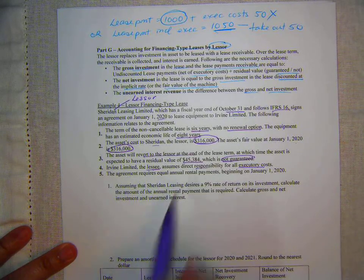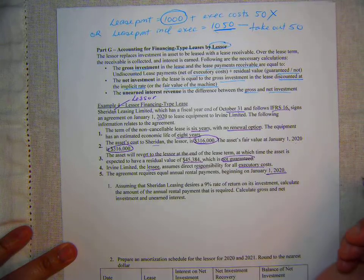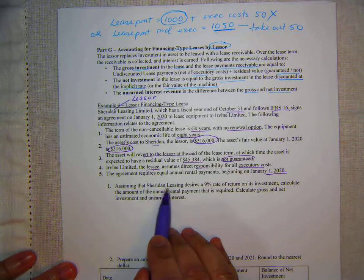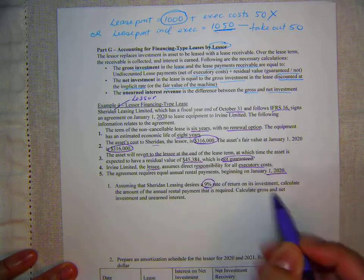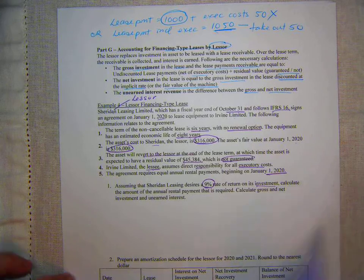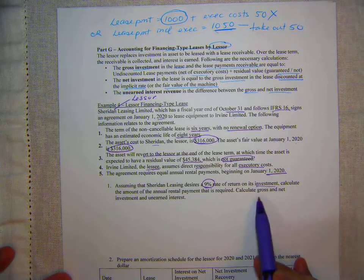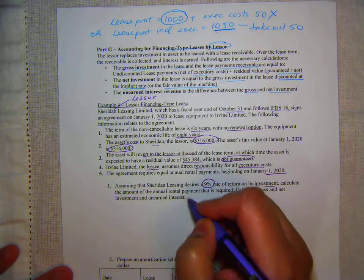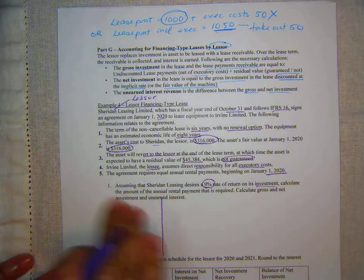The lessee assumes direct responsibility for all executory costs. The agreement requires annual rent payments beginning on January 1st, 2020. Assuming that Sheridan Leasing desires a 9% rate of return on investment, we'll calculate the amount of the annual rental payment required, and then calculate gross and net investment and unearned interest.